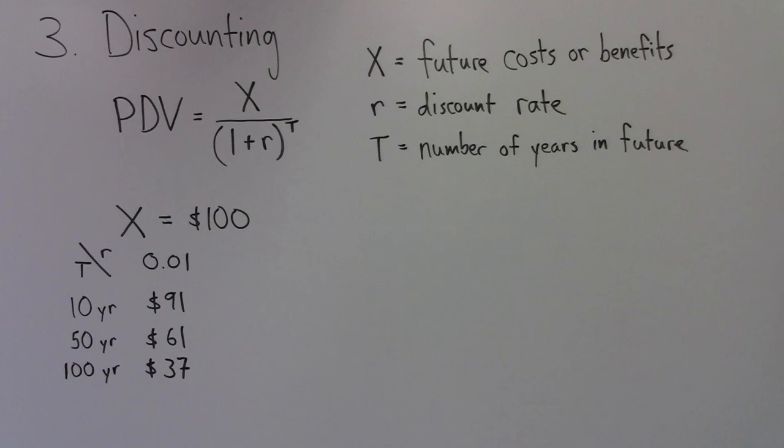A higher discount rate of 0.05, or 5%, suggests that a benefit is worth a cost today of $61, $9, or $0.76 today.